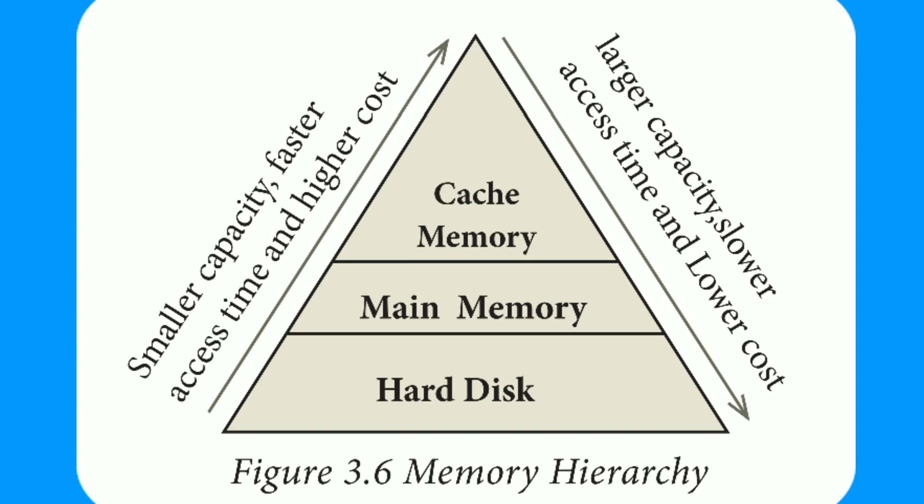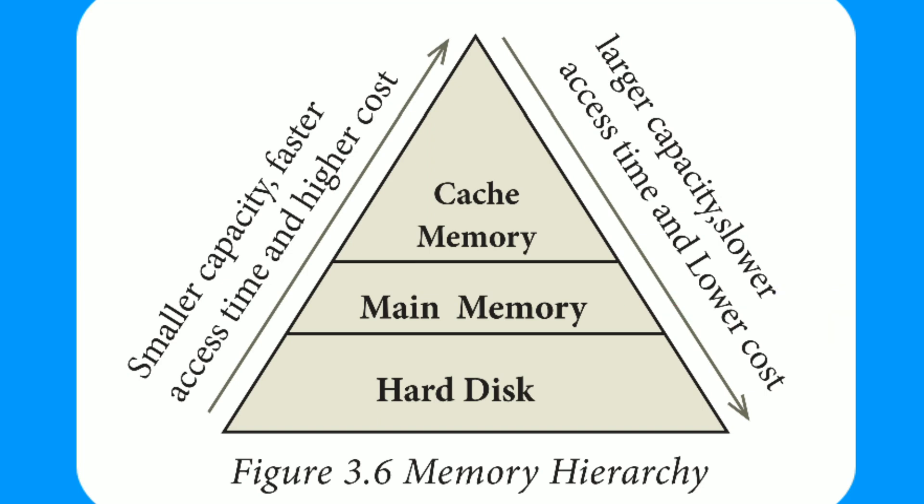In the memory hierarchy diagram, there are three types of memory: cache memory, main memory, and hard disk. On the left side, memory has smaller capacity, faster access time, and higher cost — that is cache memory. Main memory is RAM, which has a larger capacity than cache. The hard disk is secondary memory and is permanent storage. On the right side going down, memory has larger capacity, slower access time, and lower cost — that is the hard disk.